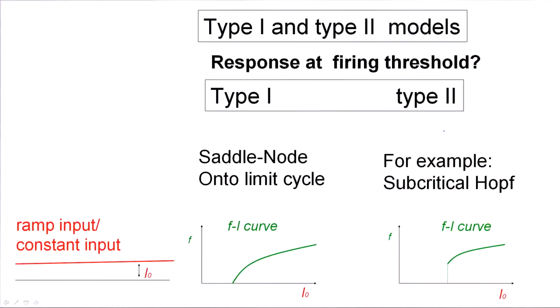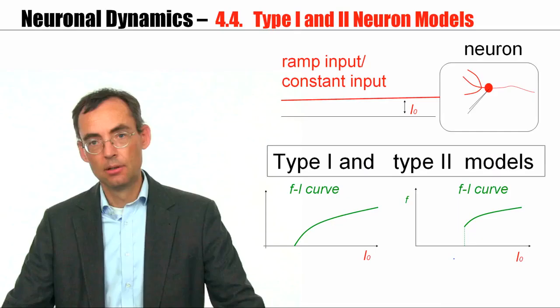Thus, we can identify a Type 1 F-I curve with a saddle node bifurcation onto a limit cycle. A Type 2 curve, which means this discontinuous gain function, can, for example, be generated by a subcritical Hopf bifurcation. How would you measure these curves? You use a constant current, nearly constant current, a very slowly increasing ramp current, so that you move very slowly along this axis. You see here firing starts at a very low frequency, firing starts at some finite frequency.